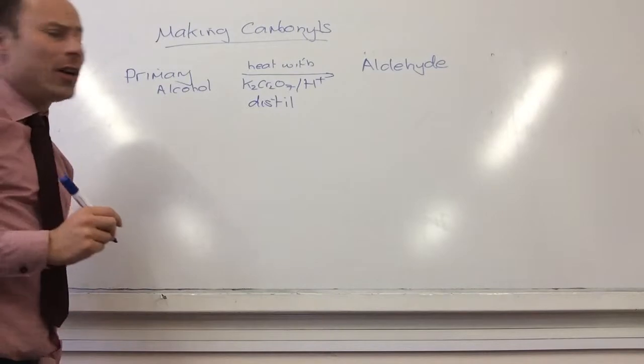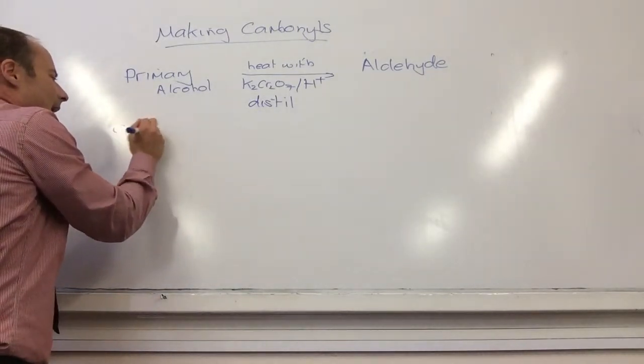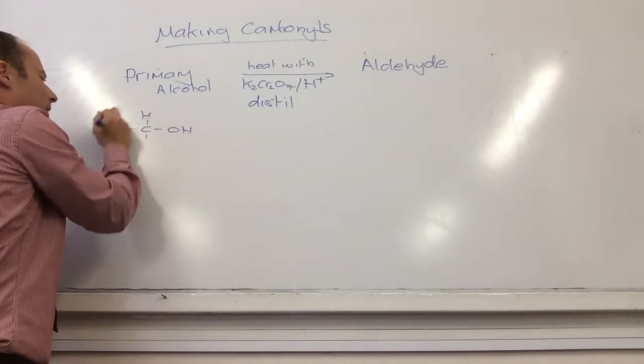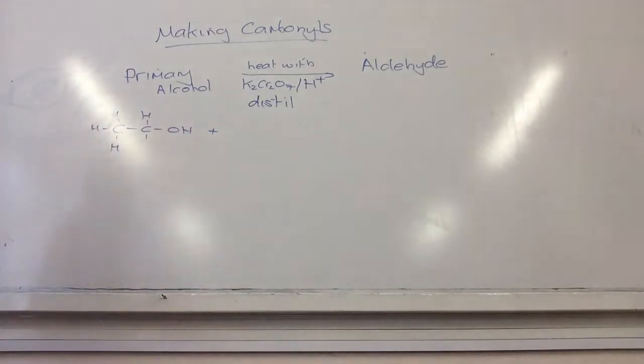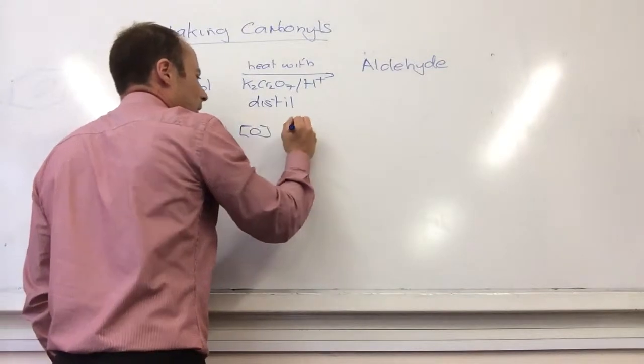Let's do an example of that. For example, if I started off with ethanol, which is my primary alcohol, how do I represent an oxidising agent? By the square brackets. Yeah, and I only need one of those.